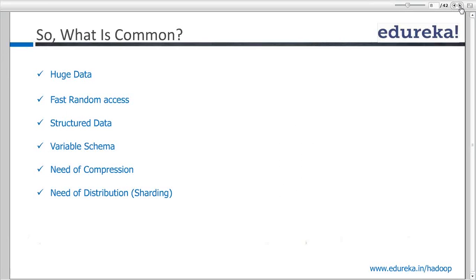In most of these cases, what is common? You need fast random access to data. The data is less structured — even in Hive, the data was structured or at least semi-structured. But the schema in HBase is variable, whereas in Hive the schema was static. Once your schema is defined in Hive, it doesn't change quickly. One of the flexibilities in HBase is that you can add columns pretty quickly.